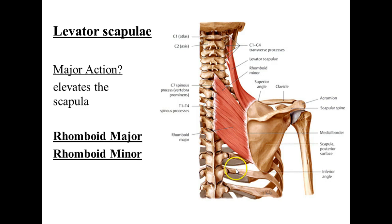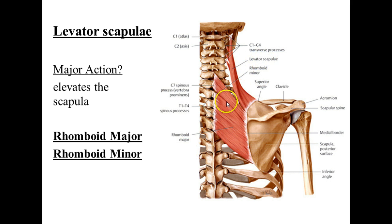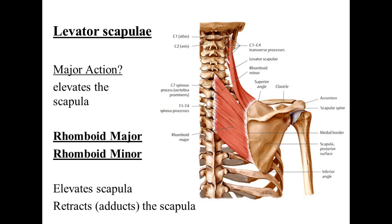Also on this page are two other muscles. If you have to guess which one's the major and which one's the minor — the bigger one's the major and the smaller one is the minor. Here's the origin, here's the insertion — this muscle is going to move the scapula in two directions. It's going to pull the scapula inward, which is adduction or retraction, but it's also going to lift the scapula upwards. So what you get is elevation and retraction.